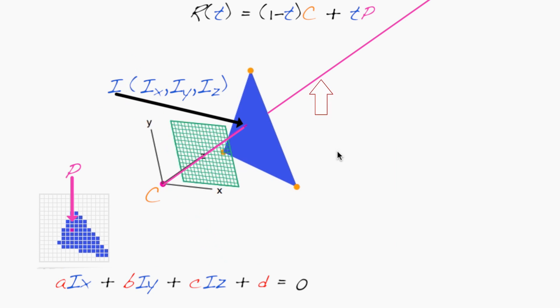I is also on the ray, meaning that there's a value of t, again let's call it t*, such that I = R(t*) = (1-t*)C + t*P.